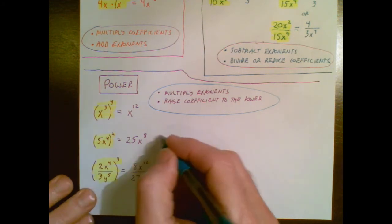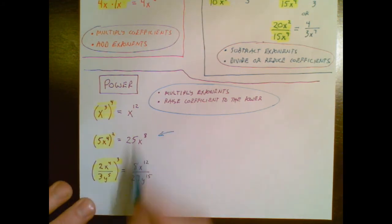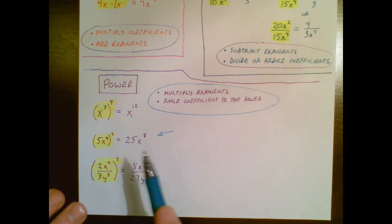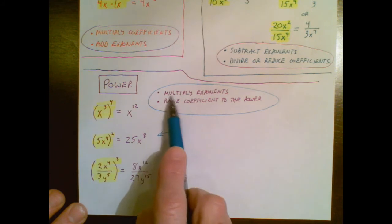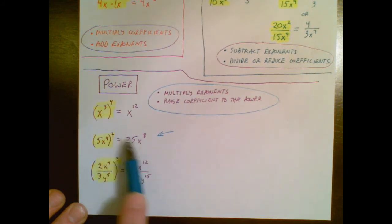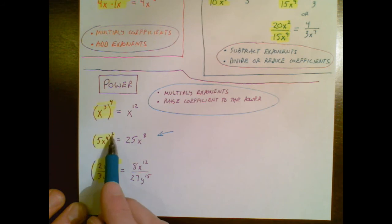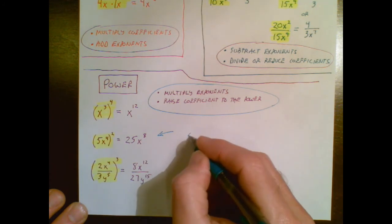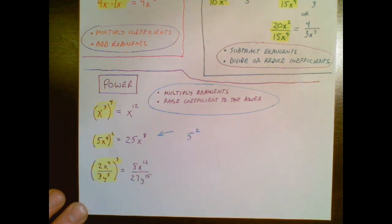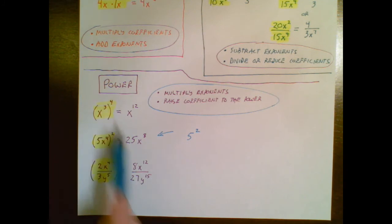So I'm going to use this example to walk through and you can see the others. Power to a power situation so I'm going to multiply exponents 4 times 2 x to the 8th. Raise the coefficient to the power so what that's really saying is we had a coefficient 5 and an exponent of 2 so I'm thinking about raising the coefficient to the power 5 squared is 25.